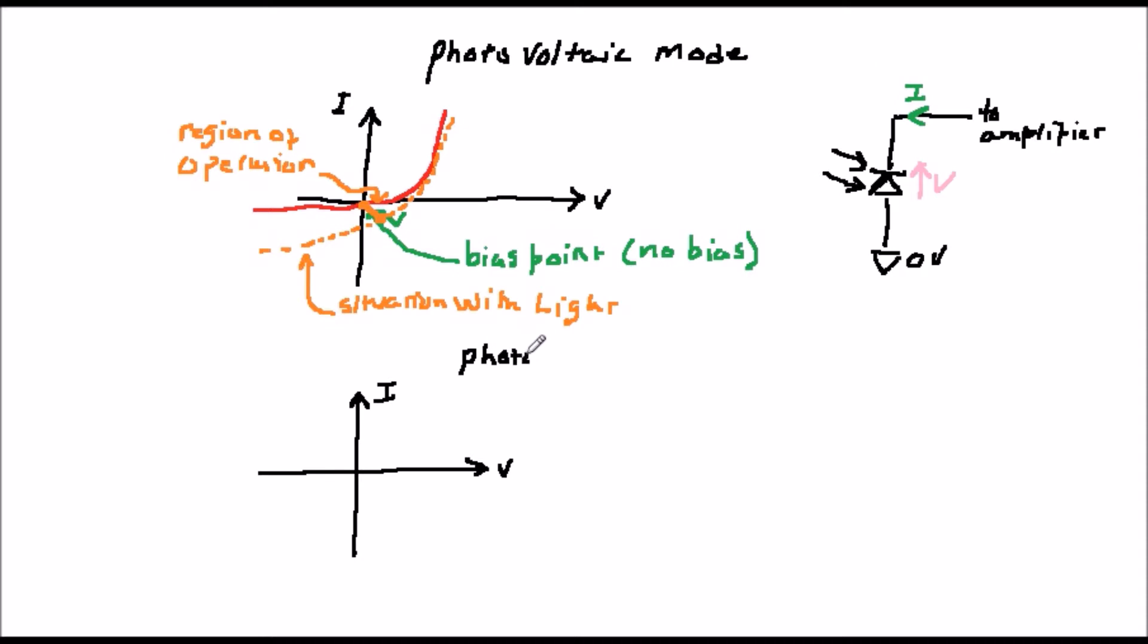The more common mode in electronics is the photoconductive mode, which is shown in the diagram, and this occurs when a diode is in reverse bias. This is fast because the reverse bias widens the depletion region, and therefore reduces parasitic capacitance across the diode, which speeds circuitry up.